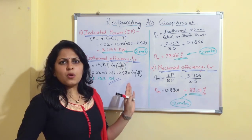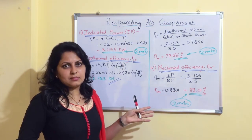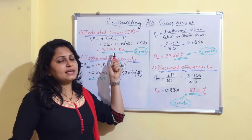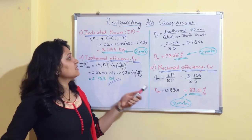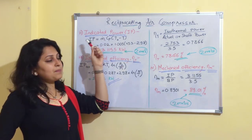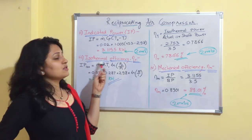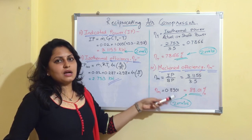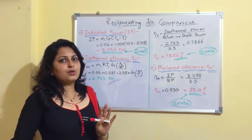This problem can come in the university exam for approximately 10 marks. The mark distribution is: 1 mark for the PV diagram, 3 marks for volumetric efficiency, 2 marks for indicated power, 2 marks for isothermal efficiency, and 2 marks for mechanical efficiency.